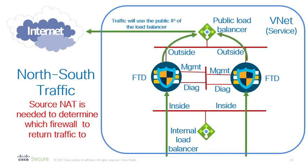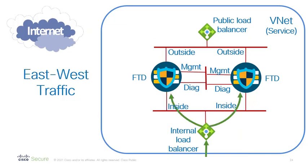Once the traffic is returned, it's sent out to the internet. Notice that the public load balancer is stateful. The east-west traffic is somewhat similar, except the traffic is going to hit the internal load balancer and be distributed to one of the firewalls, and then the firewall will send the traffic to the appropriate server.